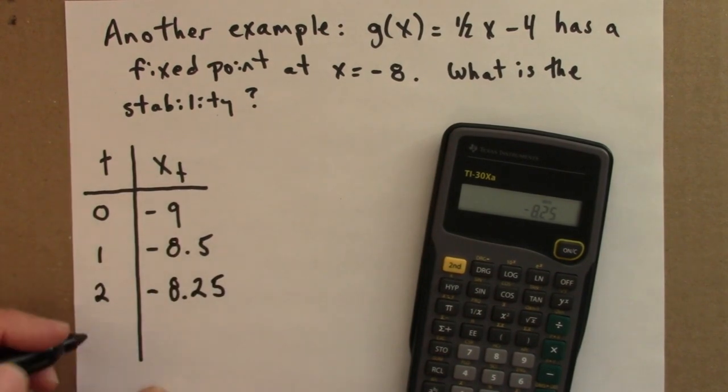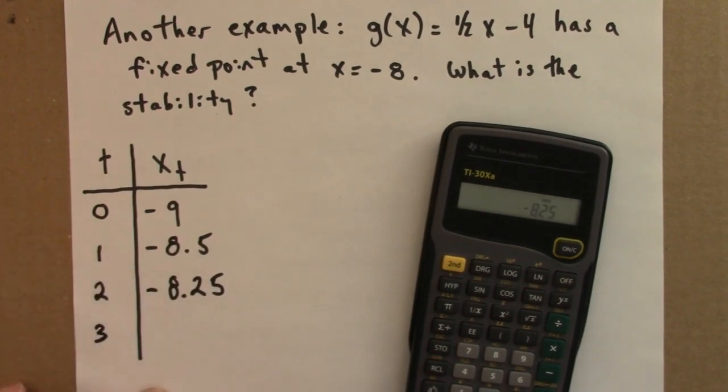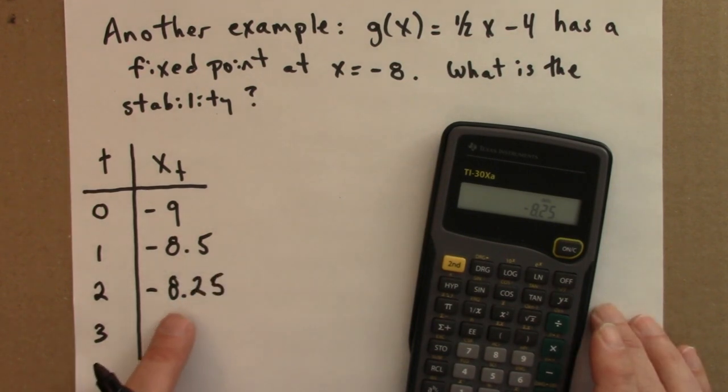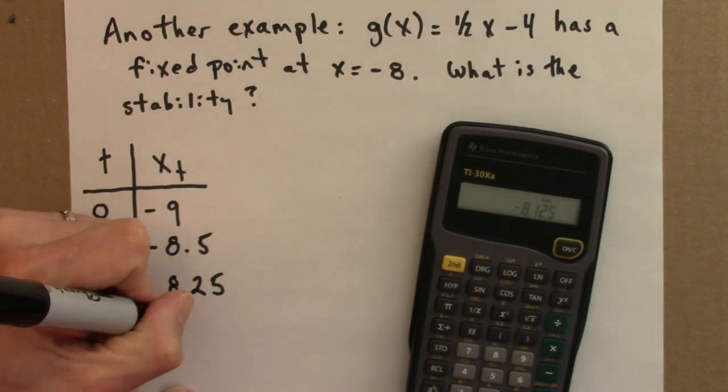It sure looks like it's getting closer to minus 8. Let's do one more. What's g of minus 8.25, divide by 2, subtract 4, and as you might have guessed.